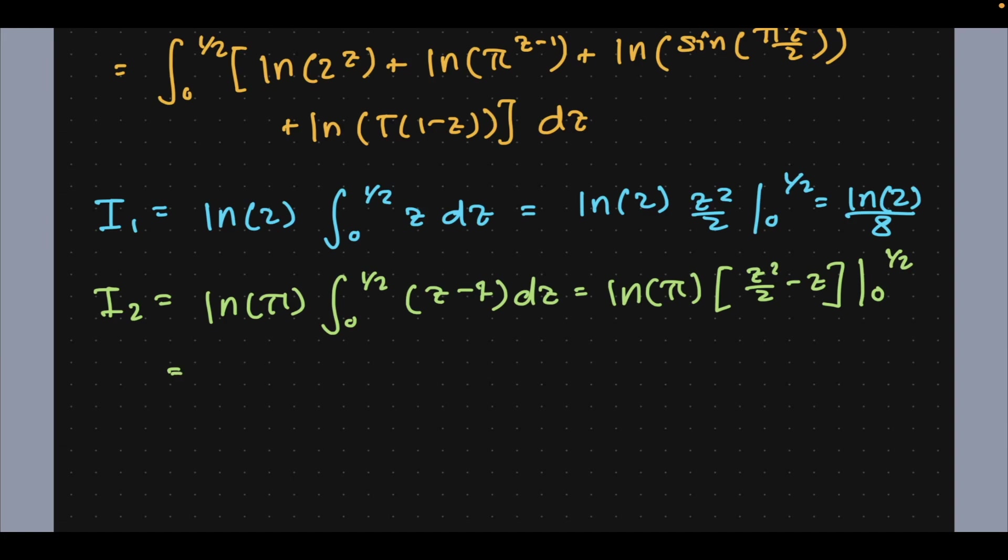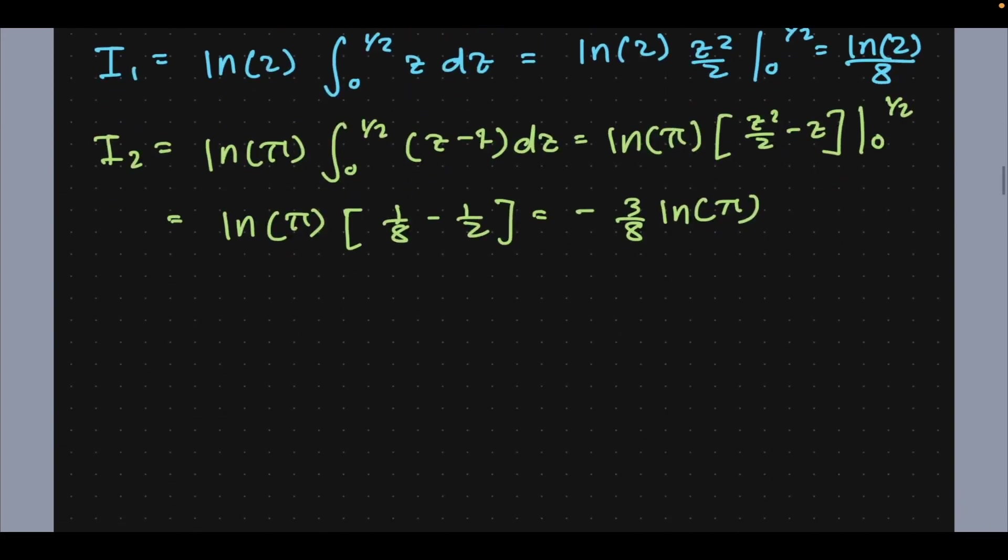Which should give me basically natural log of π times (1/8 - 1/2), I believe, which is -3/8 times natural log of π. Fair enough, it's not too unconvincing yet.